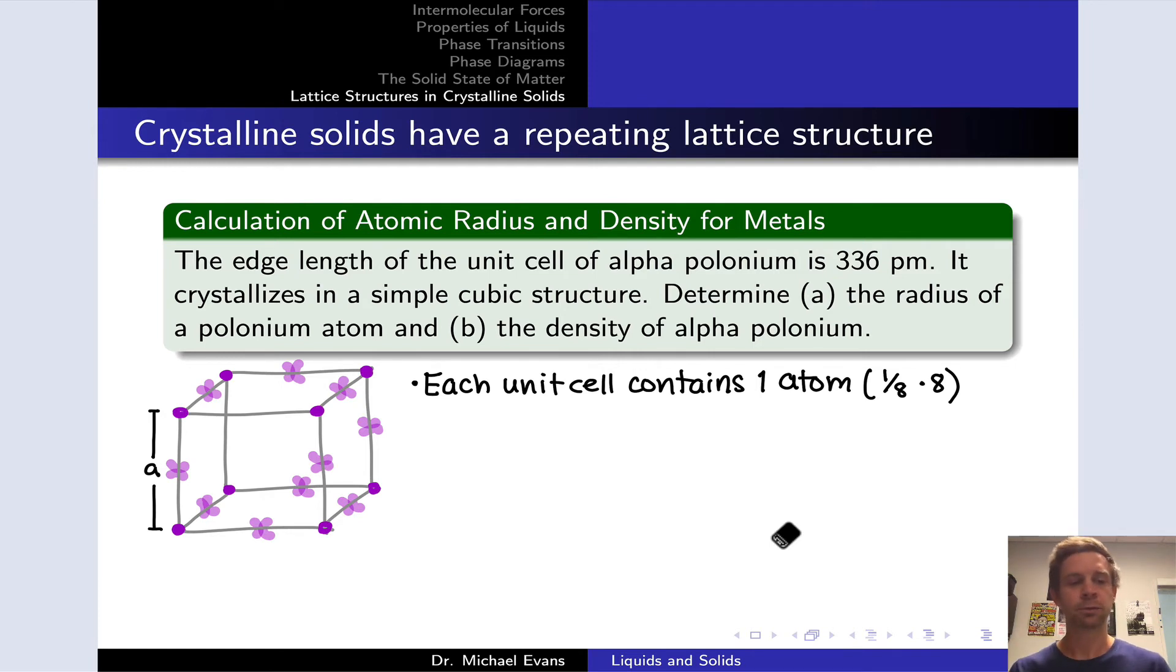Now, what about the radius? What about part A? Well, we know the edge length, 336 picometers. And because we know that the atoms are touching along an edge, the length of the edge is twice the radius. Each edge has length 2r. So simply dividing the edge length by 2 gives us the radius. 336 picometers divided by 2, 168 picometers is the radius of alpha polonium. Very straightforward as long as we understand the geometry of the simple cubic crystal structure.